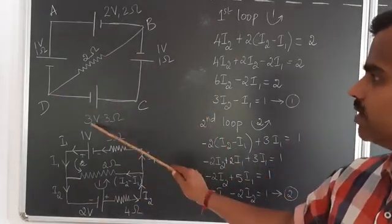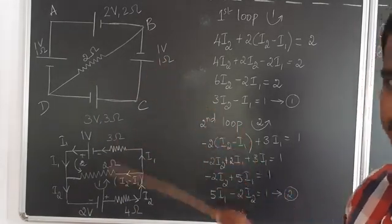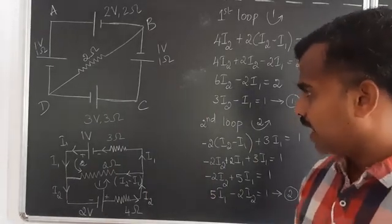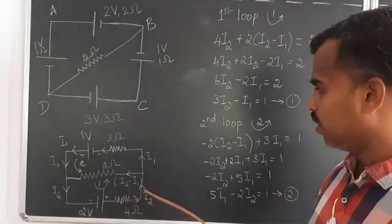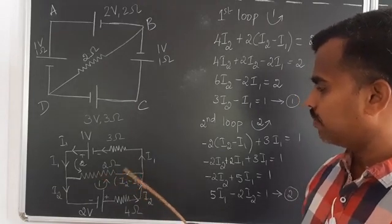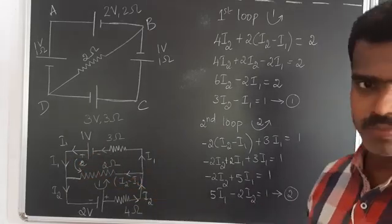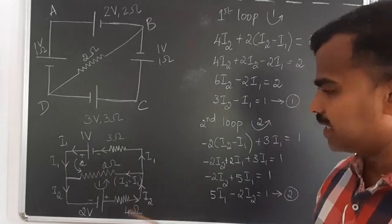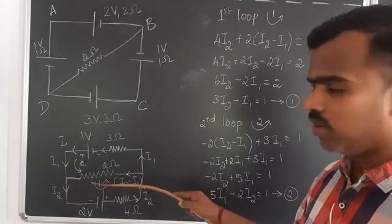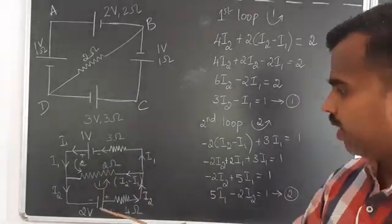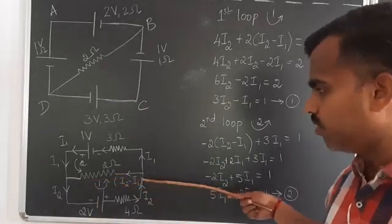In the diagram, 3 volt minus 1 volt gives 2 volts, and 3 ohm plus 1 ohm gives 4 ohms in series. Comparing: this branch is 1 volt and the other is 2 volt, so the current i2 will flow in the direction shown. I have taken i1 for one loop and i2 for the other. Where they meet, i2 and i1 are in opposite directions, so the net current is i2 minus i1.